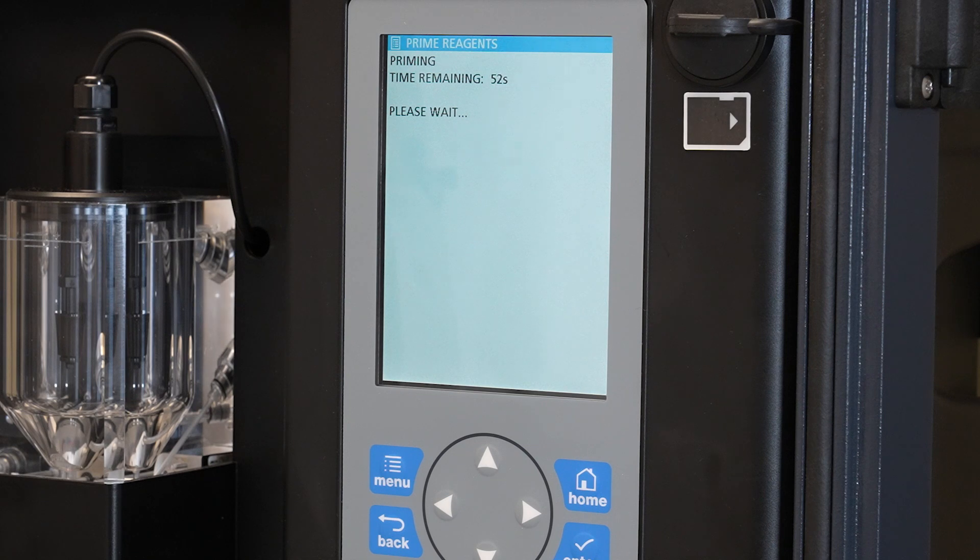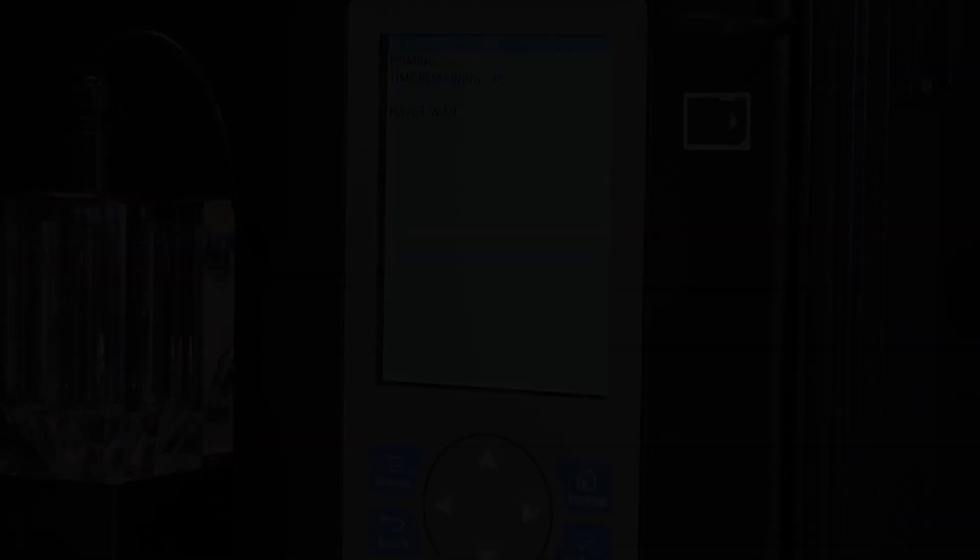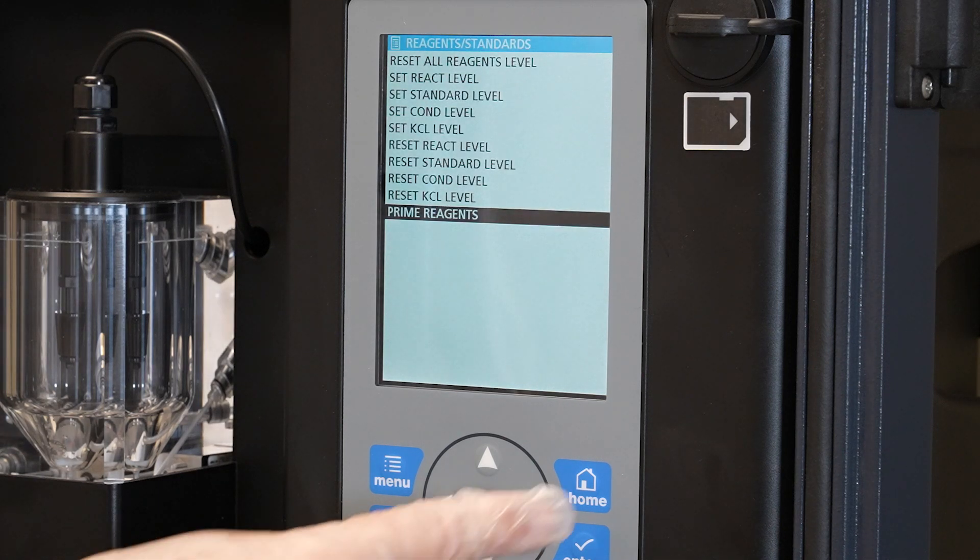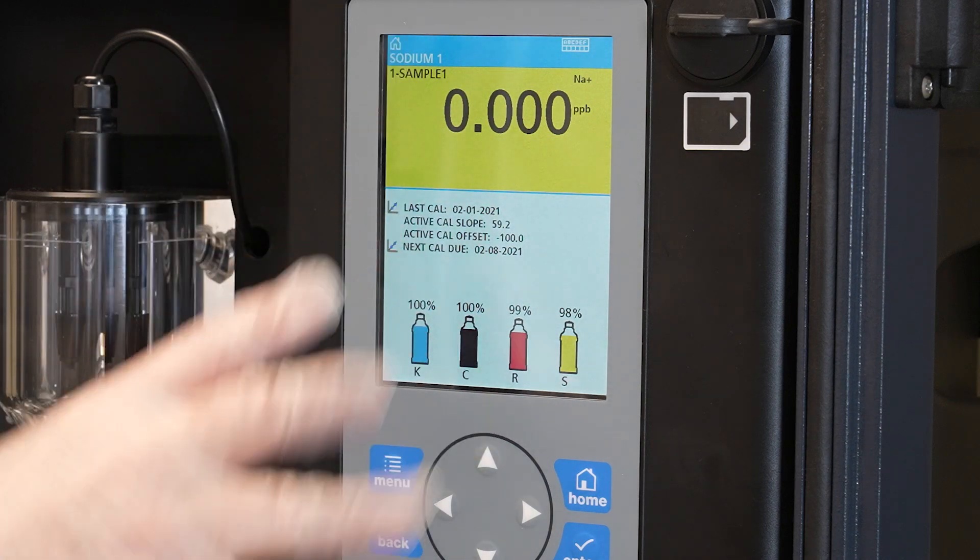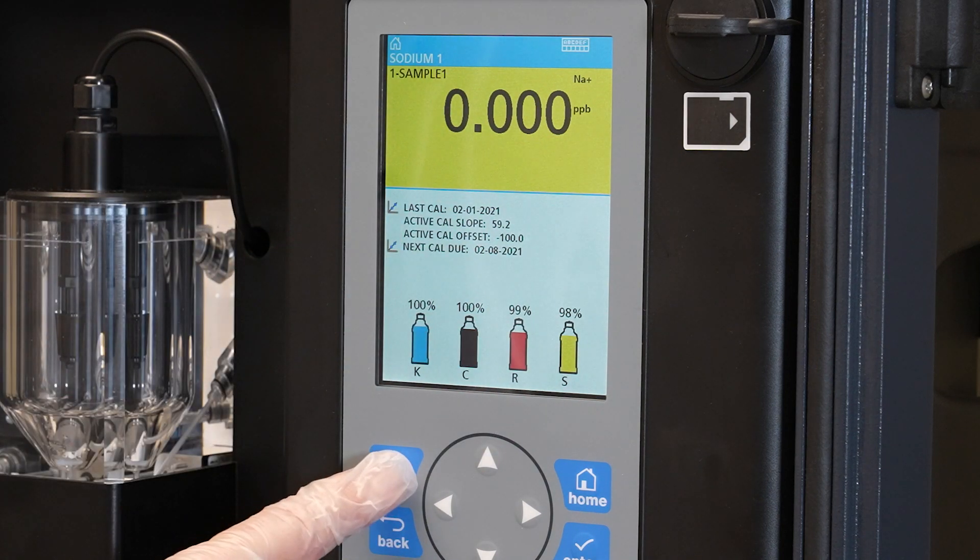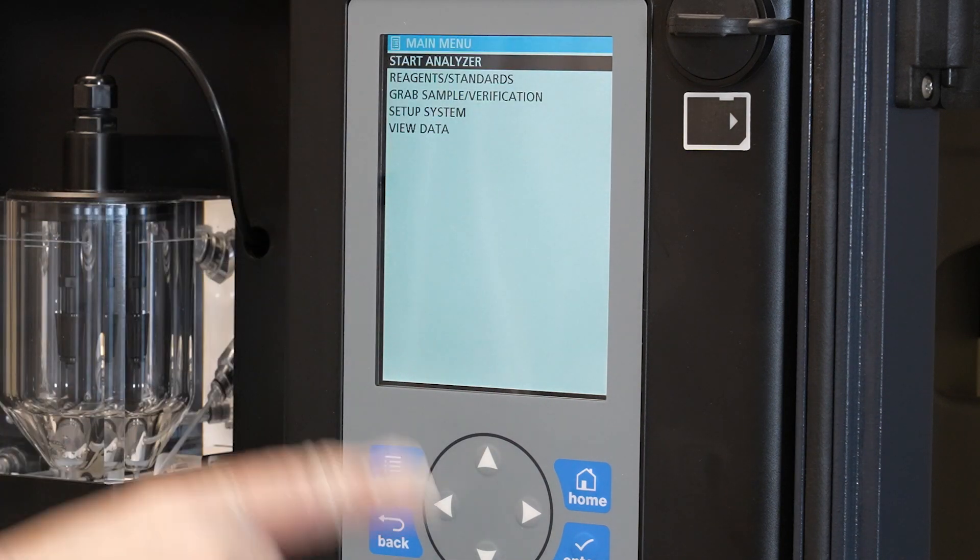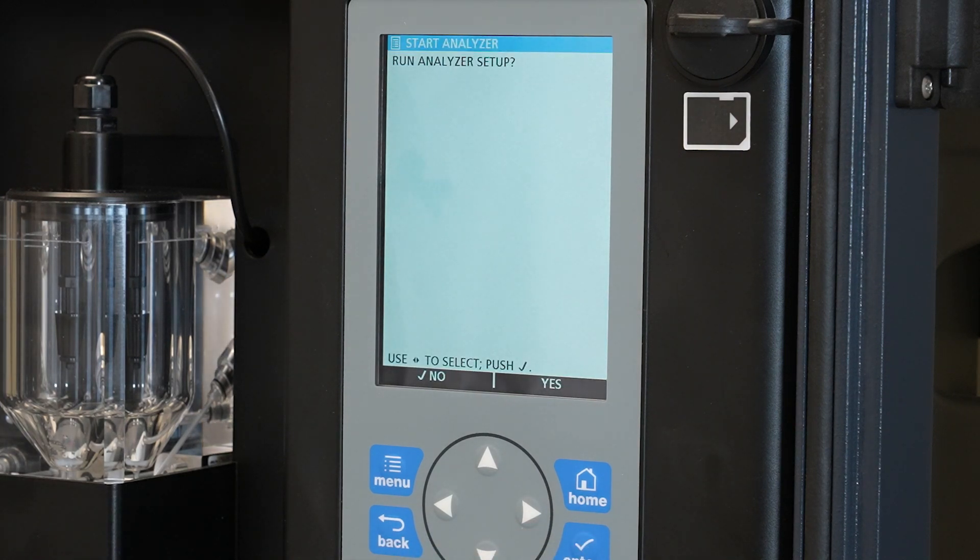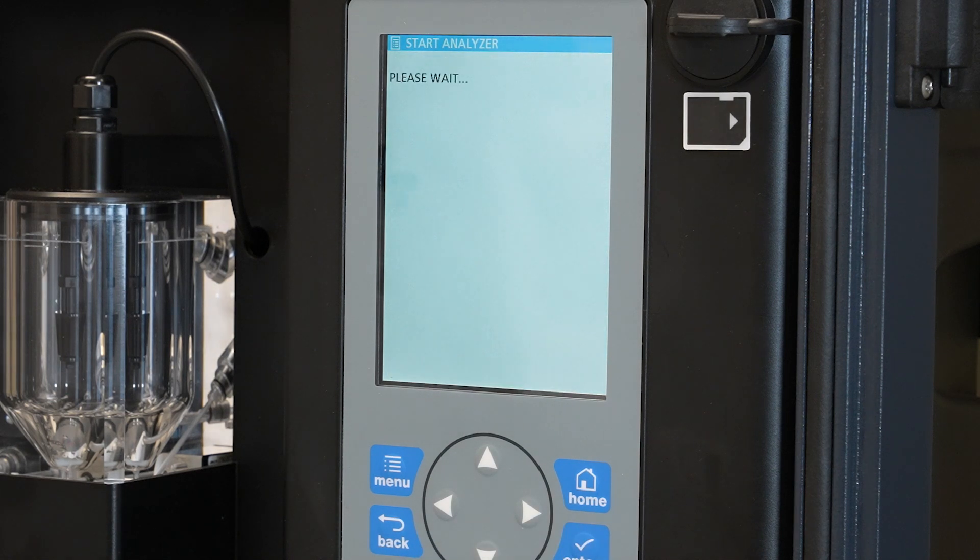So we've finished our priming. Move back to home. And now we want to restart our analyzer. Press the menu. Now we want to start. So press enter. And now we started our analyzer for regular running. It's going to ask if you want to run the analyzer setup. We don't need to do that. So we would simply press no. And now we're ready to run.